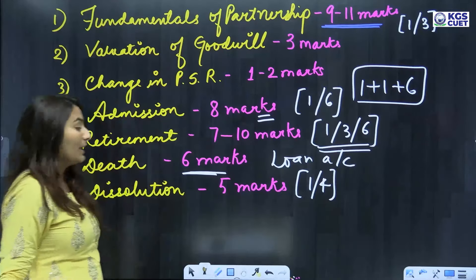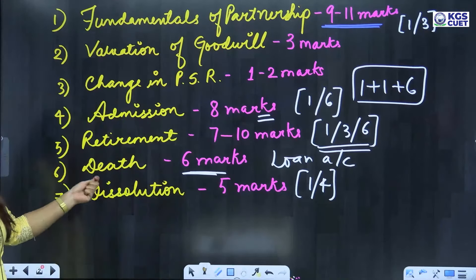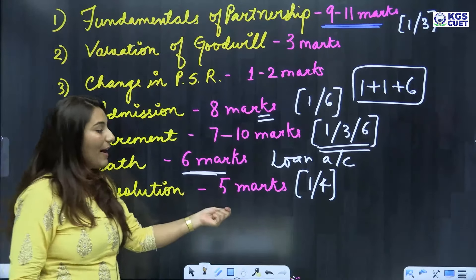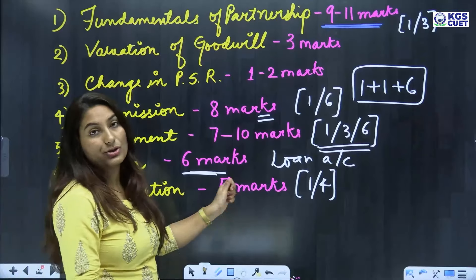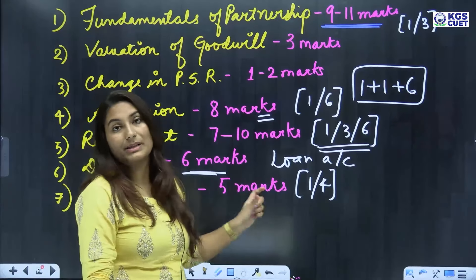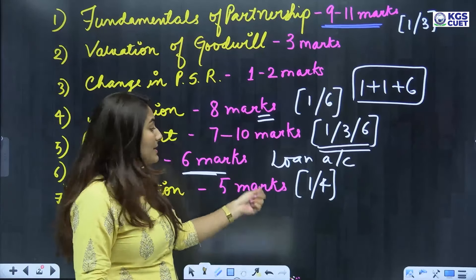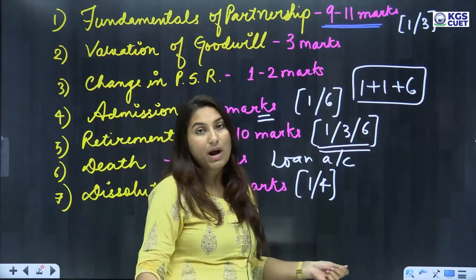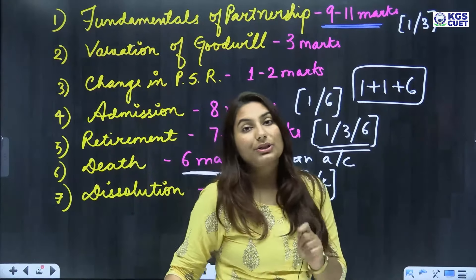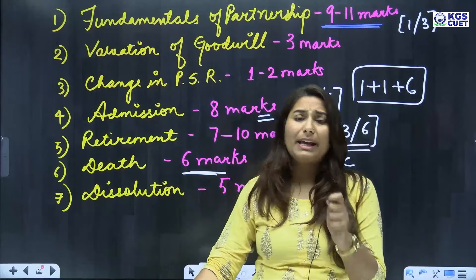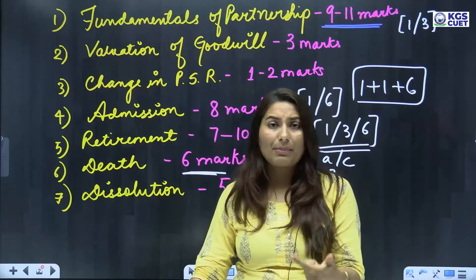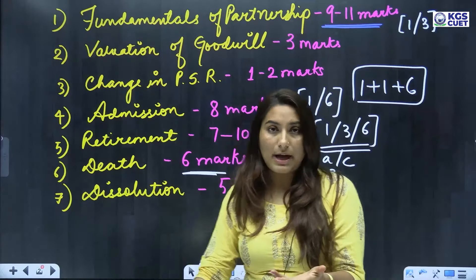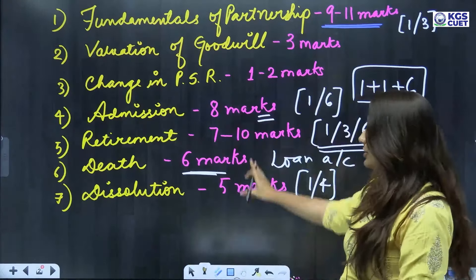Then there is Dissolution of Partnership. From dissolution, you can get 5 marks — broken into 1 mark and 4 marks questions. You can get 1 question worth 1 mark and another worth 4 marks from dissolution.